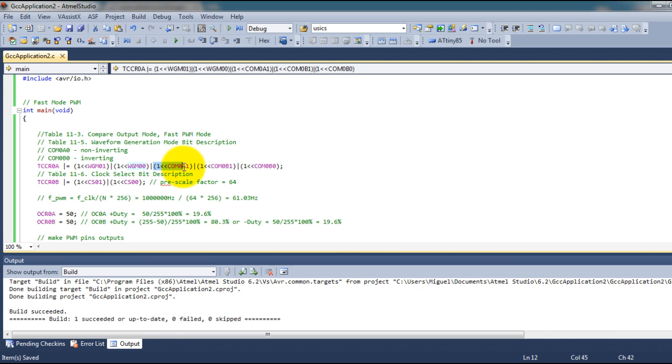This is where I have selected non-inverting for my A channel and inverting for my B channel or pin.